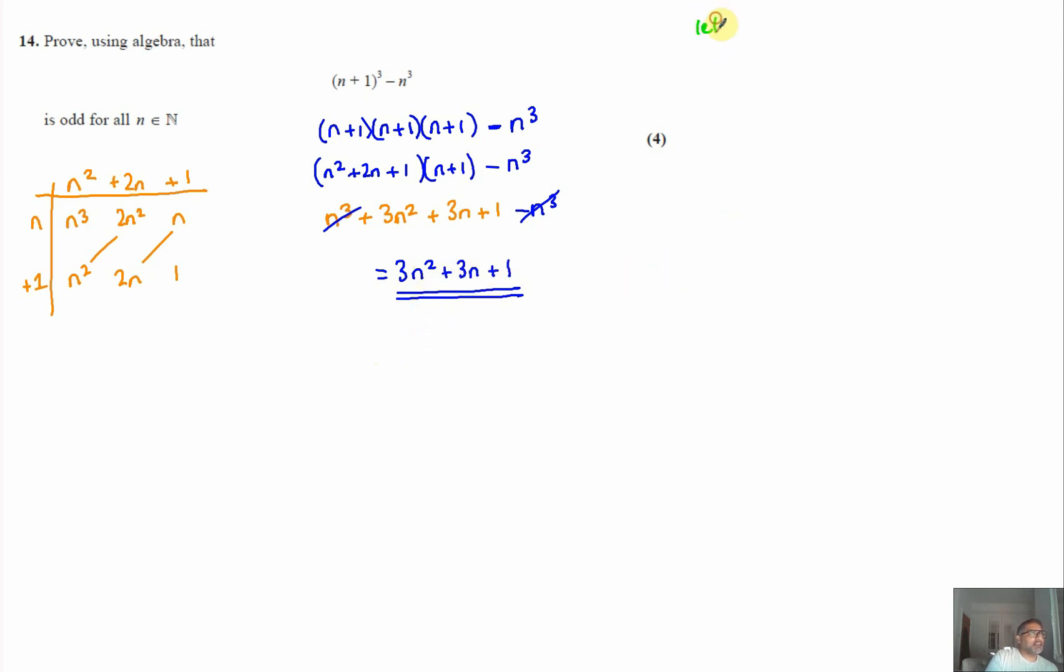If I let n equal an even number, then we can represent n as 2k. So let's let n equal 2k. I'm using a different letter. This can represent any number whatsoever. Two of any number will give us an even number. So if I substitute that in, that gives me 3 times (2k)² plus 3 times 2k plus 1.